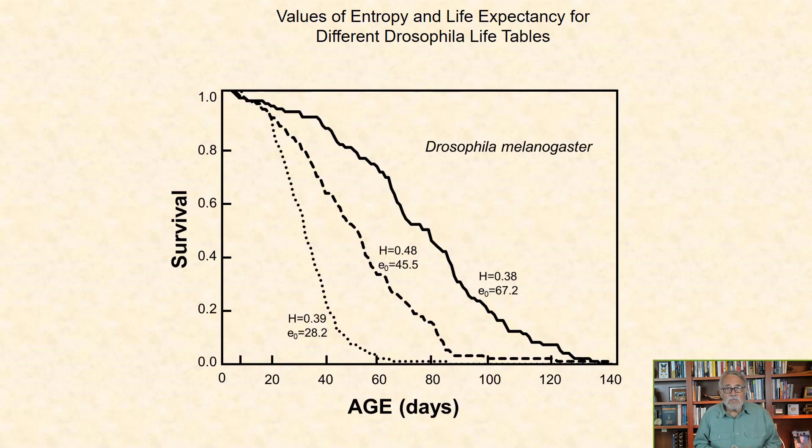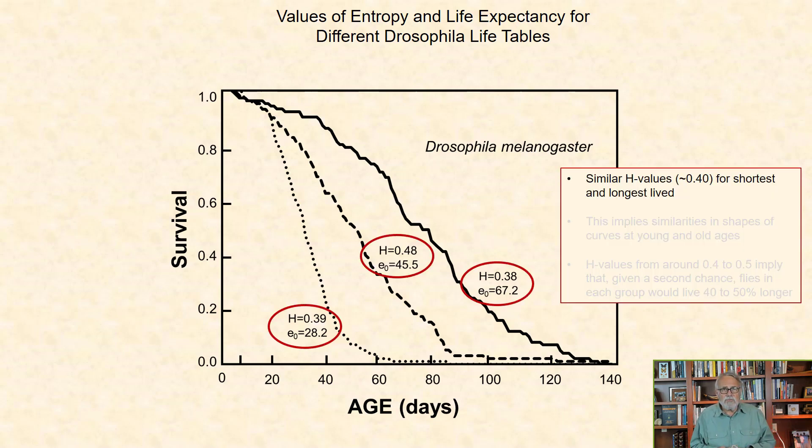Here are example survival curves for short, medium, and long-lived cohorts of Drosophila with corresponding entropy values. Note the following. First, there are similar H values around 0.4 for both the shortest and the longest-lived cohorts, even though there's large differences in their expectation of life. This implies similarities in the shapes of these respective curves at the young and the older ages.